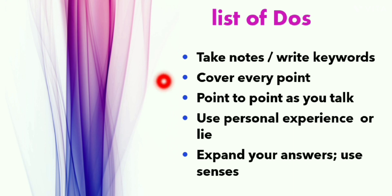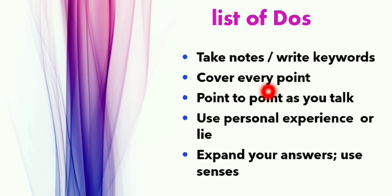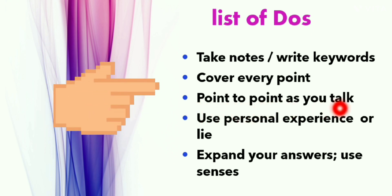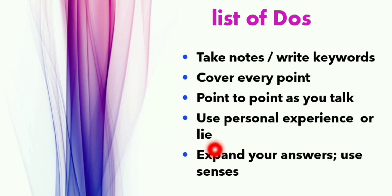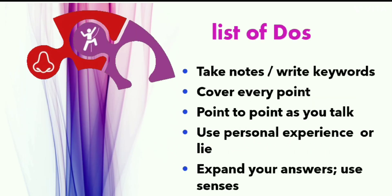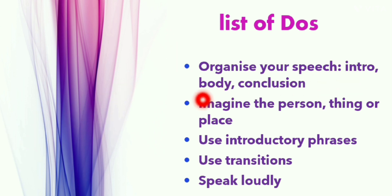Now let's discuss the do's. First, because you have one minute to prepare, take notes and write keywords, and cover every point — all three points given. As you talk, move your finger to point to each point. Use personal experience; you can also use experience of friends or siblings, and if you don't have any experience, it's okay to make one up. Expand your answers using your senses — 'I see,' 'I taste,' 'I feel.' Organize your speech with a proper intro, body, and conclusion.